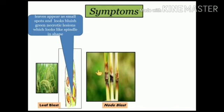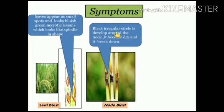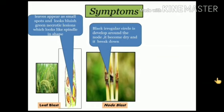Second is node blast. At the node of the paddy plant, black irregular circles develop around the node and it becomes dry and ultimately breaks down. Due to the growth of mycelium of the fungus, vessels of xylem and phloem become blocked, so water and nutrients cannot move, and ultimately plants become dry due to lack of nutrients and water. This is node blast.